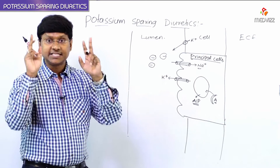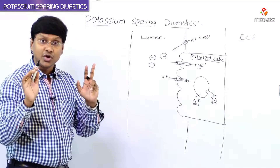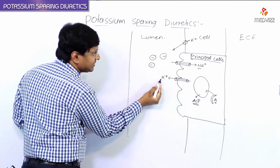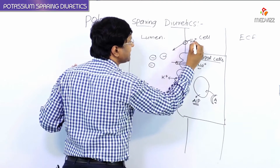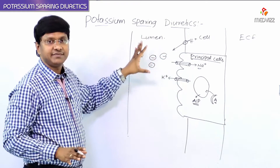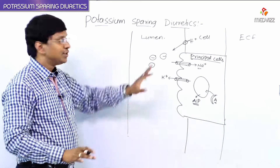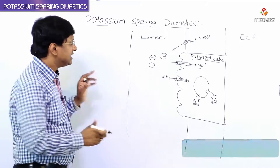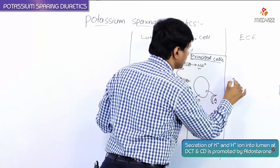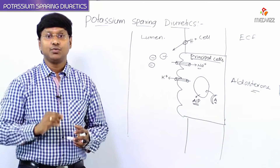Under this potential gradient, the negativity developed within the lumen must be neutralized. To neutralize this negativity, potassium is secreted from the principal cells and H+ ion is secreted from the intercalated cells. The secretion of potassium and H+ ion into the lumen is promoted by what is called aldosterone.